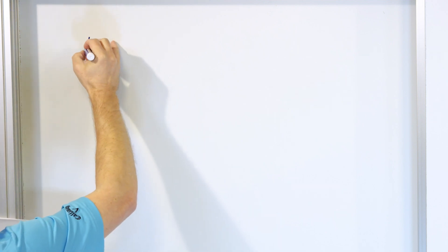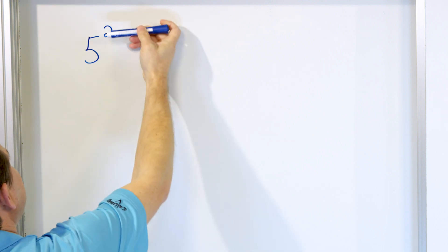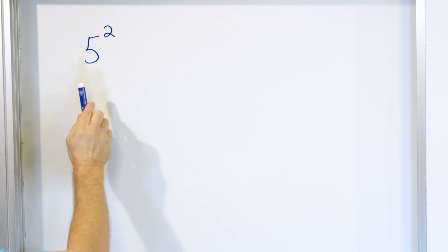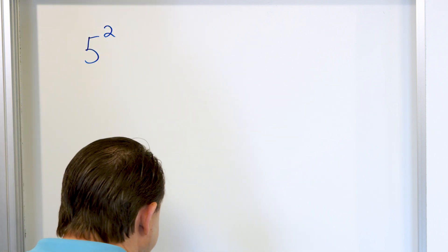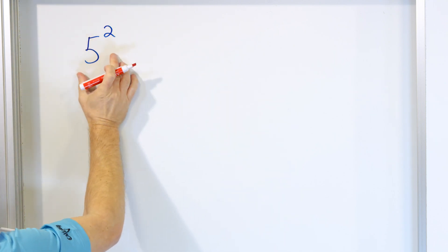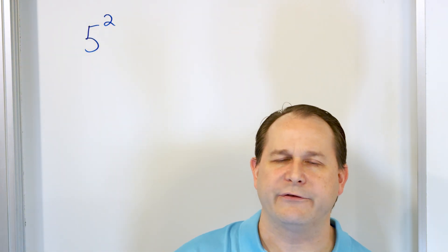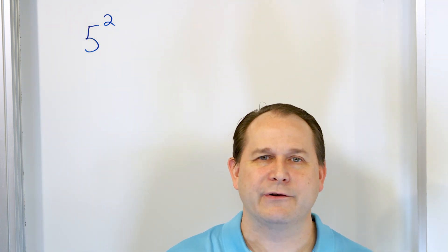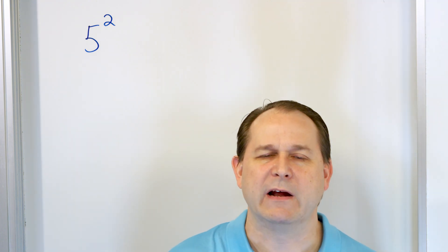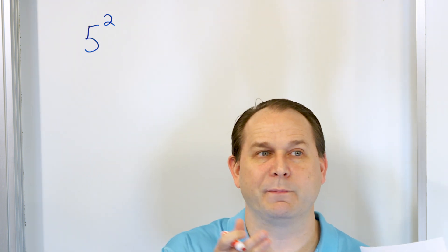What we have here is the number five raised to the power of two. The exponent itself is this number two up here, and what we call the base is the number five. Now what does this actually mean? This means it's a shorthand way of writing a multiplication. We want to express this as what we call a product of factors.